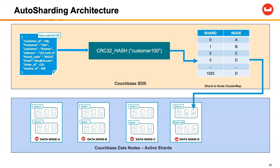With Couchbase, in terms of how to distribute the database evenly among the number of data nodes within a Couchbase cluster, we have a concept of auto sharding based on the key of the document that will be input into the Couchbase cluster itself. Once the Couchbase SDK inserts a document into Couchbase, the customer key — in this example, customer 100 — is put through a CRC32 hash algorithm, which then places it into a specific shard. Couchbase has 1024 shards, and these keys are evenly distributed based on the outcome of that algorithm.